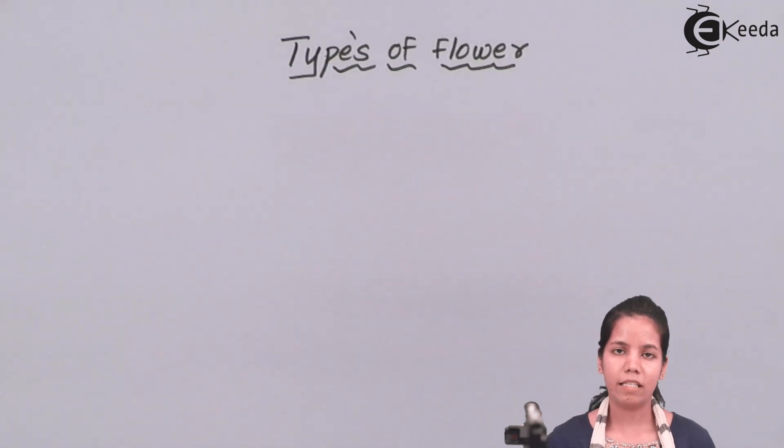Now, depending upon whether essential whorl is present or accessory whorls are present, plants or flower is basically divided into four different types: complete flower, incomplete flower, perfect flower, imperfect flower.